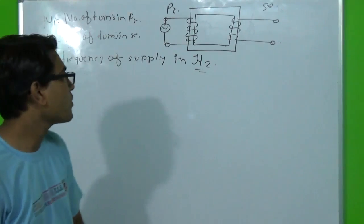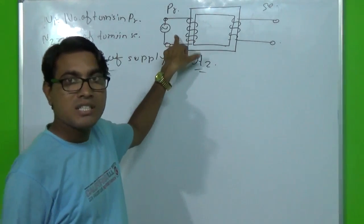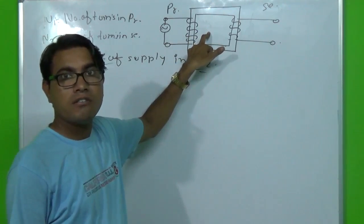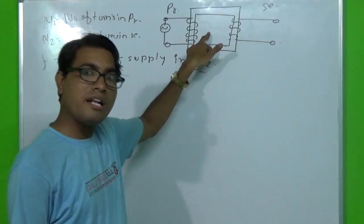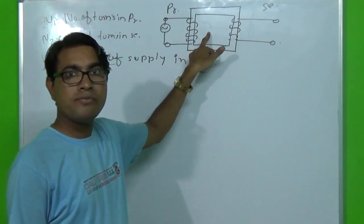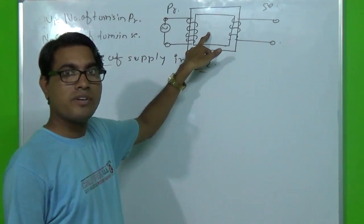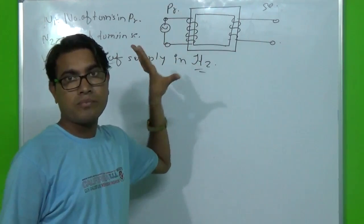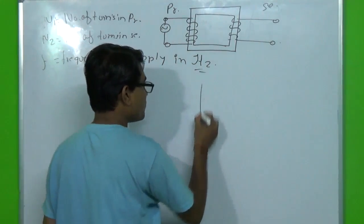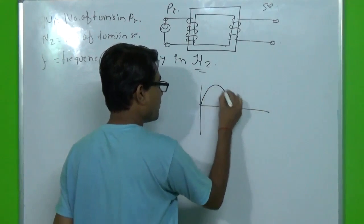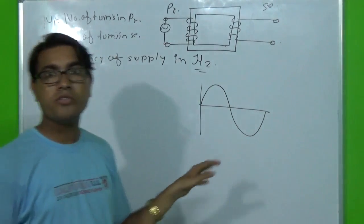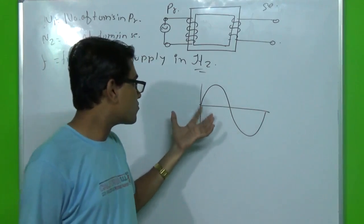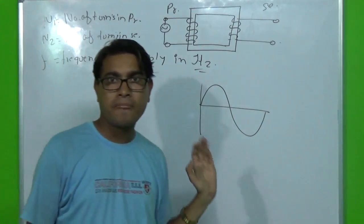Since the primary is connected to an AC supply source, the primary will generate a flux which is also of alternating nature. We can draw the waveform for the flux which flows through the iron core. We assume that the wave shape is purely sinusoidal — we consider it an ideal case.